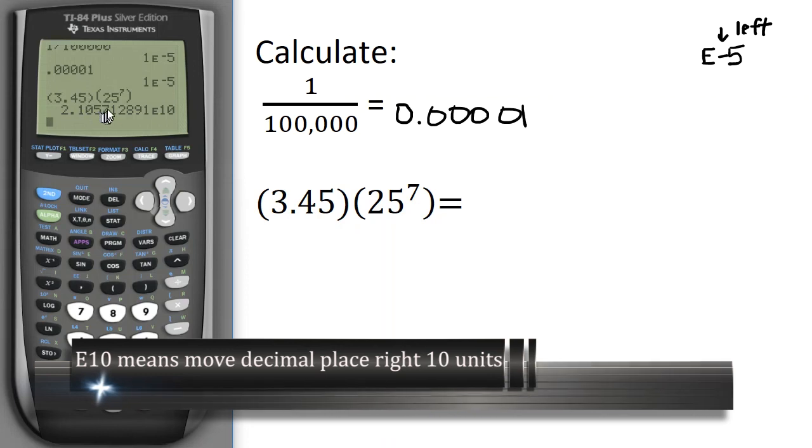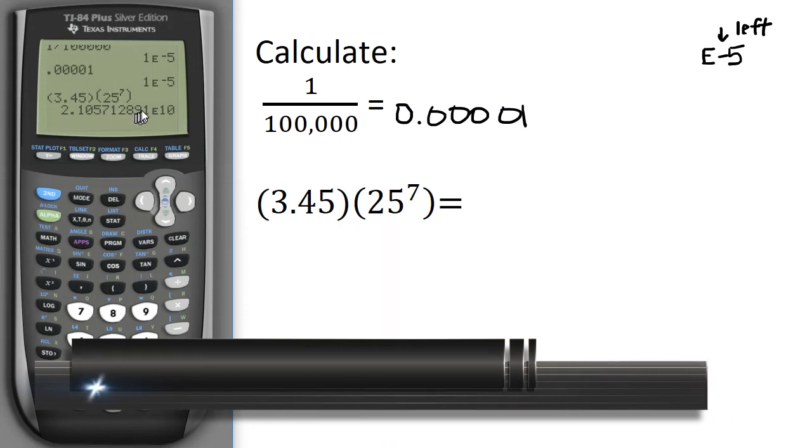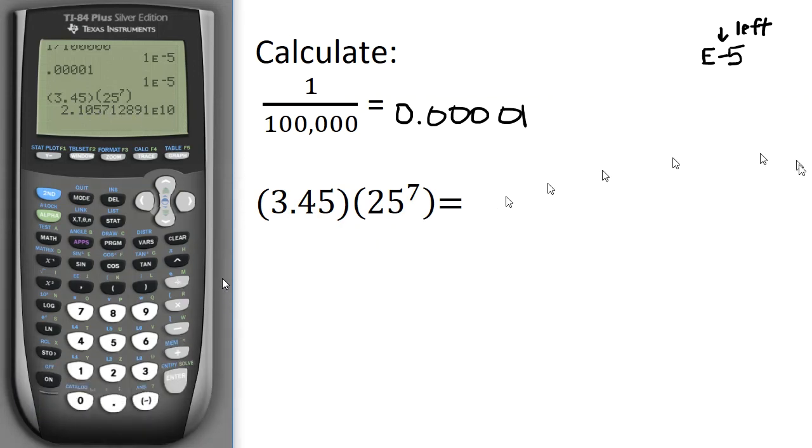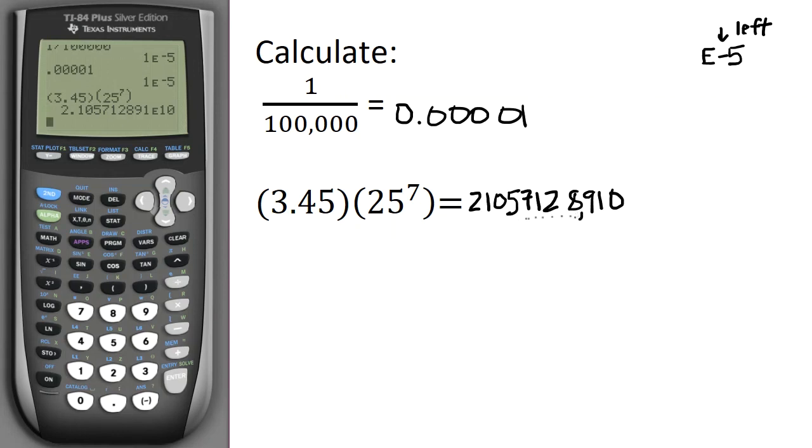So let's just count that. I'm going to take the decimal place and move it 1, 2, 3, 4, 5, 6, 7, 8, 9, 10 slots. So that's going to give me the number 21,057,128,910. So if I put a decimal place every 3, that's 21,057,128,910, a very large number.